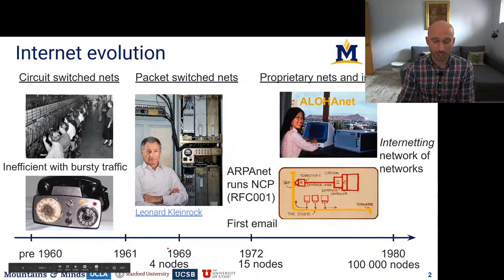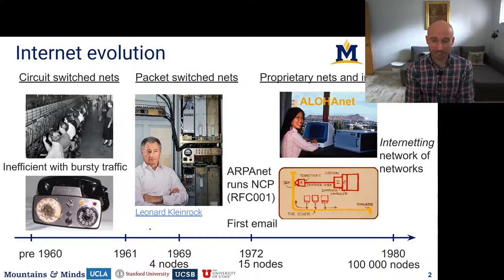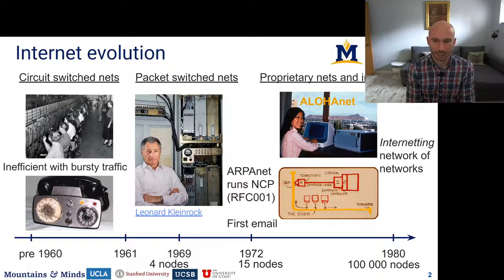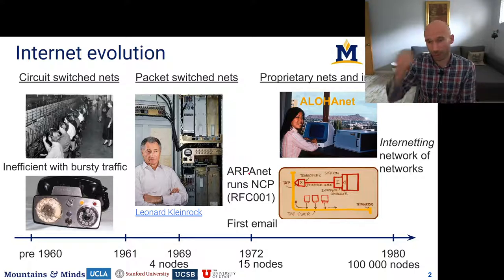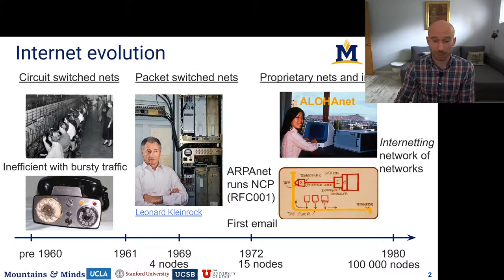In 1969, the internet had four nodes — at UCLA, Stanford, UCSB where I did my PhD, and University of Utah. That was the early internet running the NCP protocol. In 1972 this was expanded to 15 nodes. ARPANET, the precursor to DARPA, was also running NCP developed at UCLA, and the first email program was built in 1972.